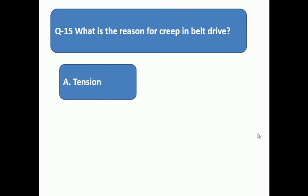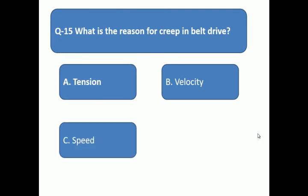Question 15: Effect of play. A: tension, B: velocity, C: speed, D: friction.